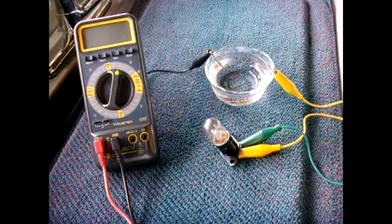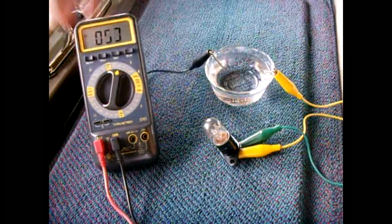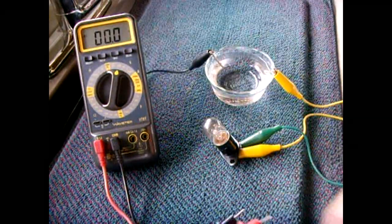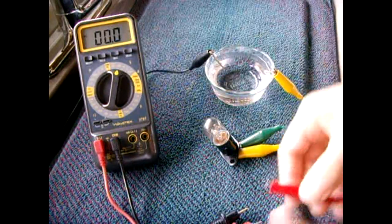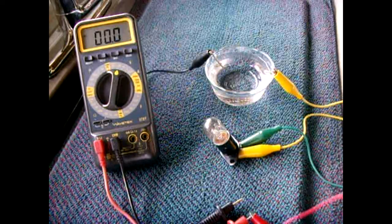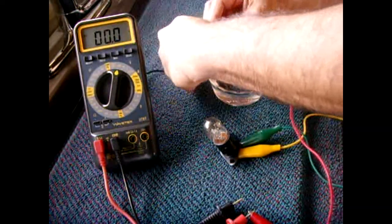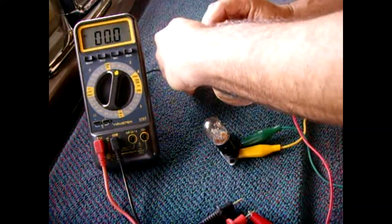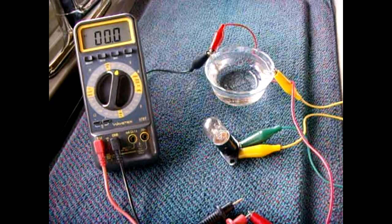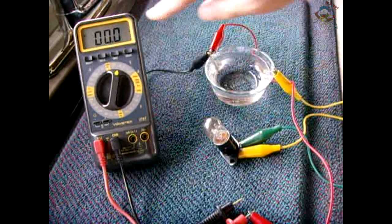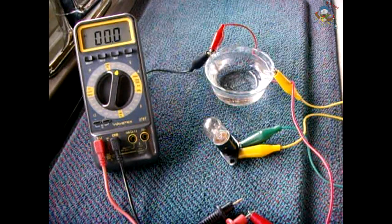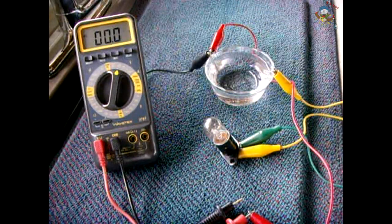Before I turn on the power, let me connect up my digital multimeter to the circuit so you can confirm that there is 120 volts being supplied. Once the circuit's powered up, I'll take the black probe, touch it to the neutral on the lamp, and you should see 120 volts show up on the meter. Let me turn on the power.